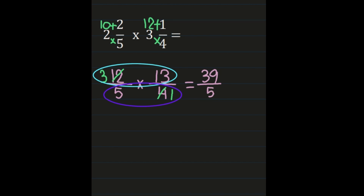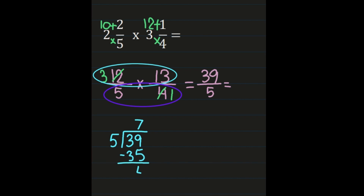So we have 39 fifths. To convert to a mixed number, we divide 39 by 5: 39 divided by 5 is 7, with 7 times 5 equaling 35, and 39 minus 35 giving a remainder of 4. Our quotient of 7 becomes the whole number, the remainder 4 becomes the numerator, and the denominator of 5 remains the same. Our product is 7 and 4/5.